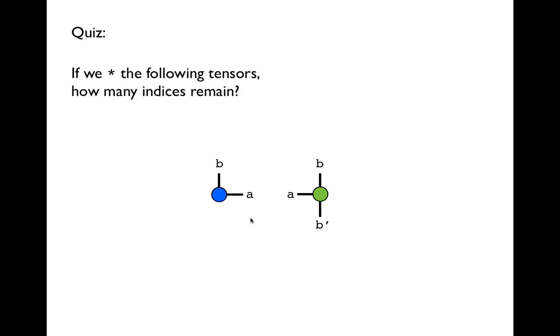In this product, the a indices on the left tensor and right tensor match, so those will be automatically contracted. The b indices also match, so they will be automatically contracted. But the b prime index doesn't match any other indices on the left tensor, so it will remain uncontracted. So the product of these two tensors will be a rank one tensor that will have an index b prime.